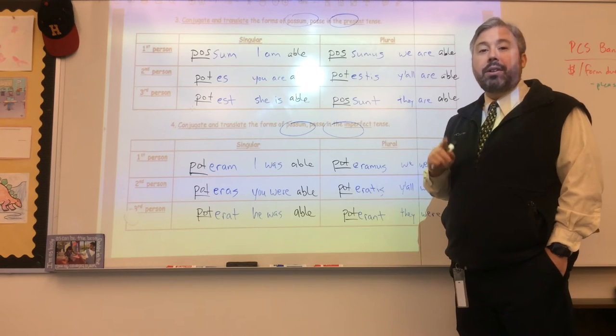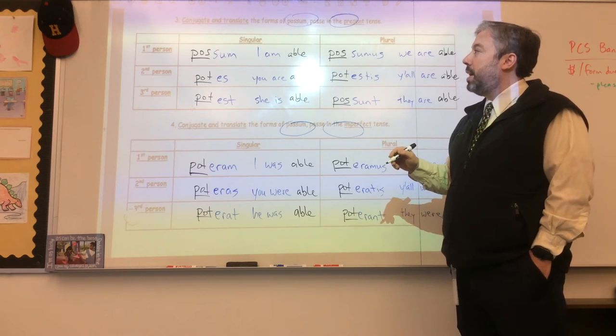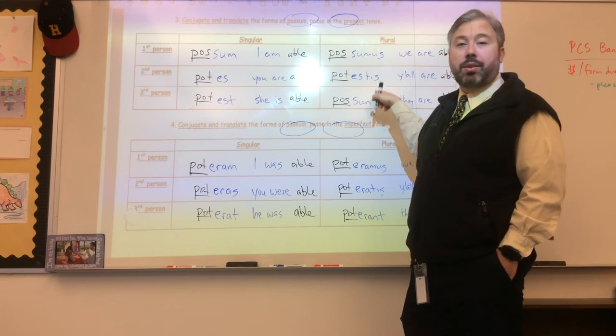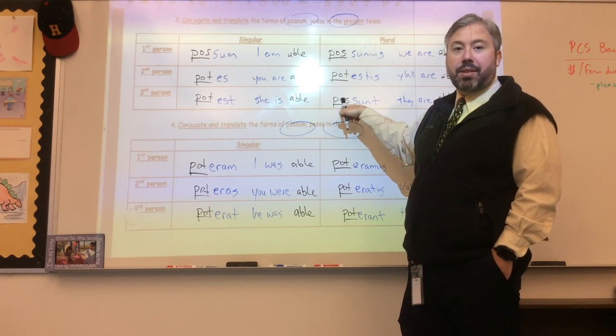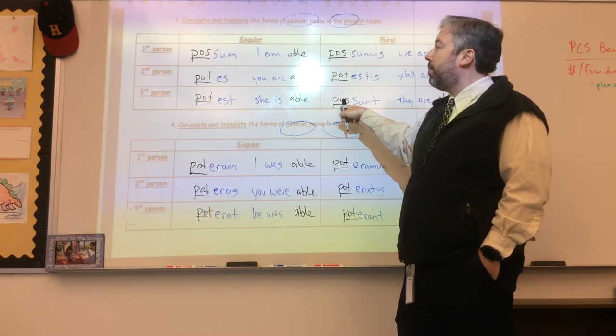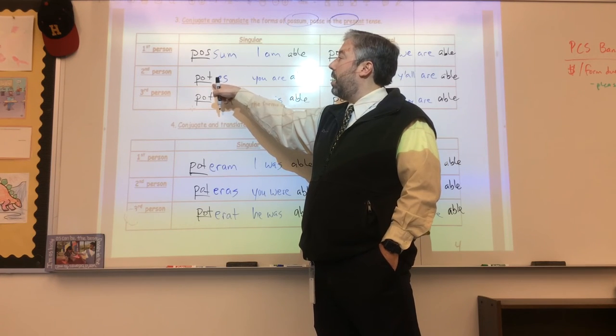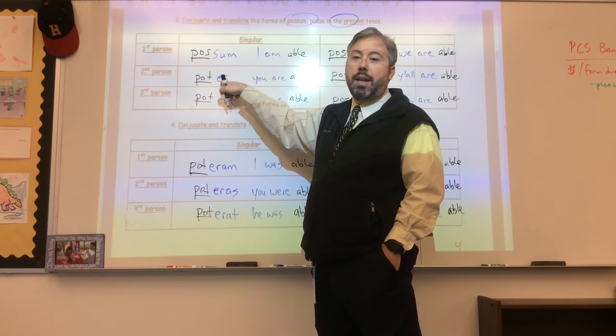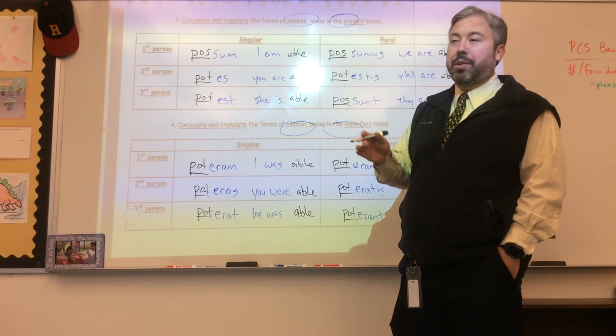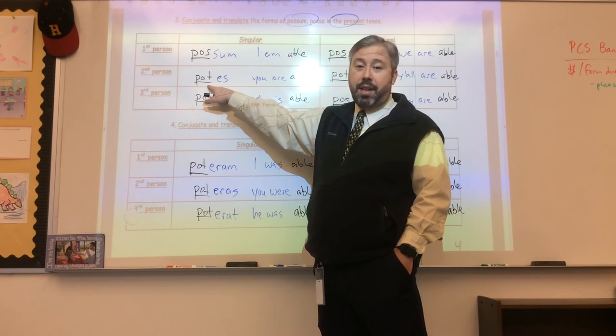There is one pattern to help you guys remember. Notice if there is an S in to be, like sum, sumus, sunt, then there is an S in the form of possum or posse, to be able. If there is a T, it comes before an E. So here is the mnemonic that another class came up with years ago: If there is an E in to be, then you have got to add a T.